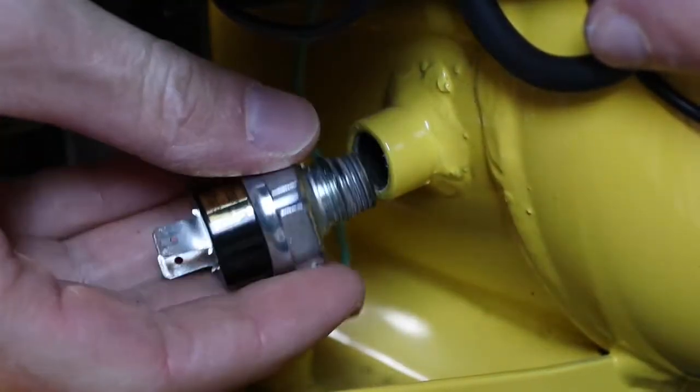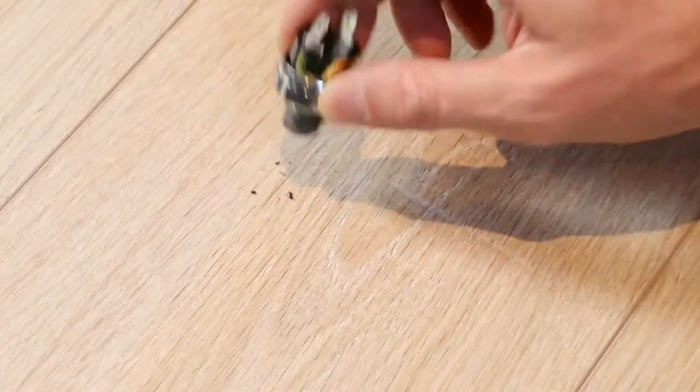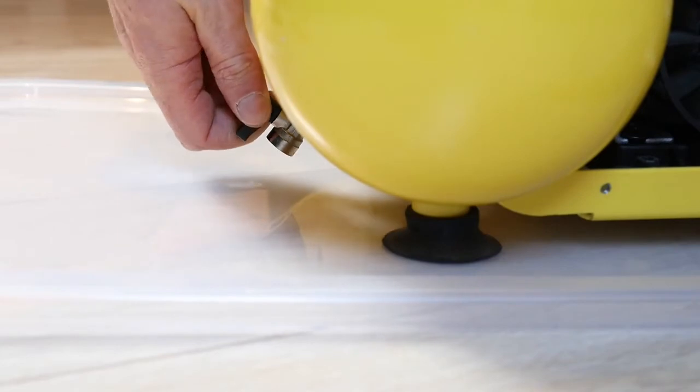Then the sensor can be unscrewed and look at that. Condensation inside the tank has caused the sensor to rust. This is why you should drain the tank when you're done using it. Something I clearly should do more often.